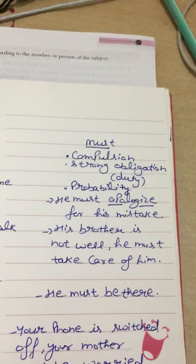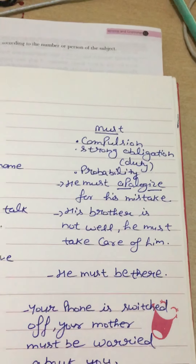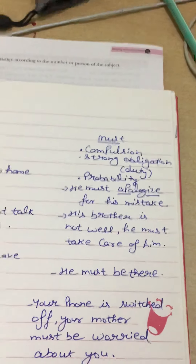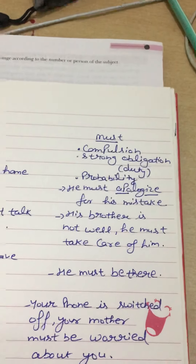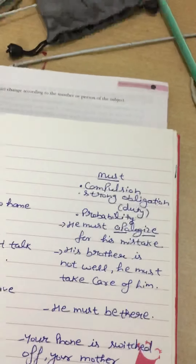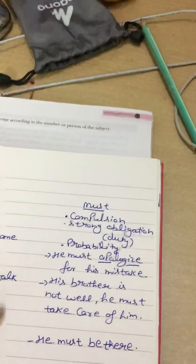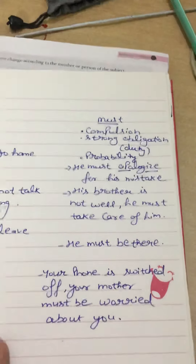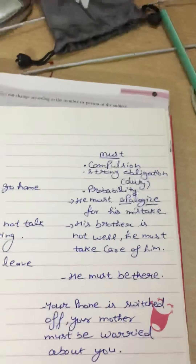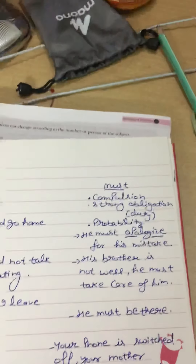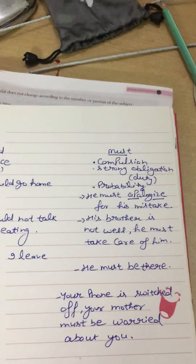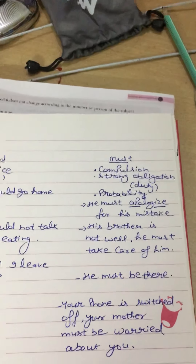For duty/obligation: 'His brother is not well, he must take care of him' — uska bhai theek nahi hai toh usse uska dhyan rakhna chahiye. For probability: 'He must be there' — this is expressing strong probability. Another example: 'Your phone is switched off, your mother must be worried about it' — yahan probability hai ki aapki maa zaroor pareshan hogi.